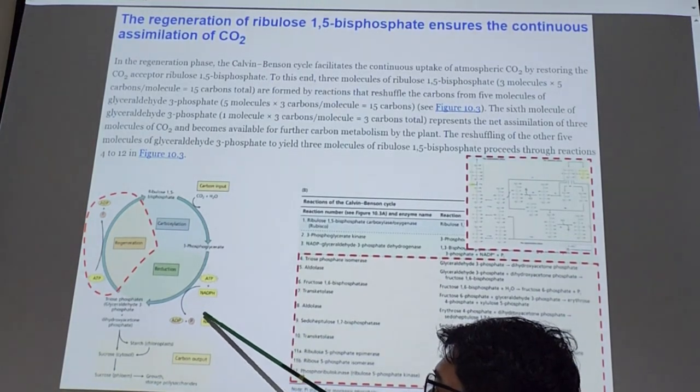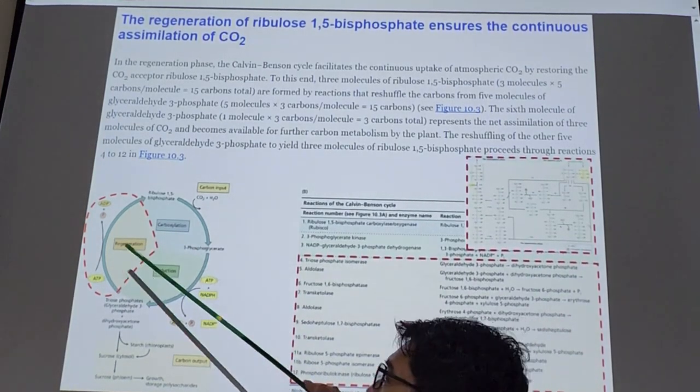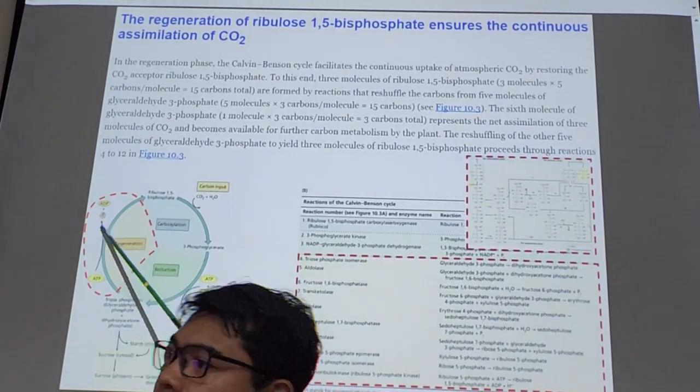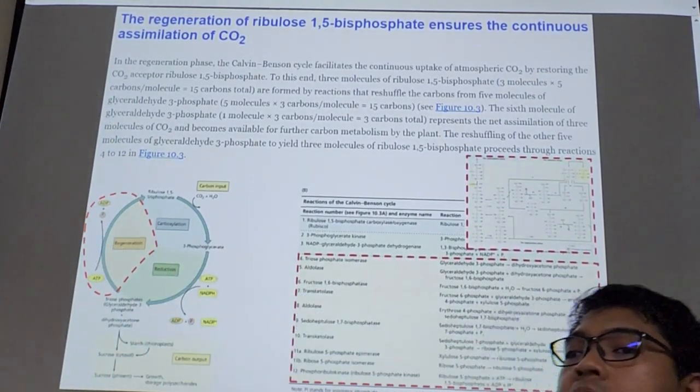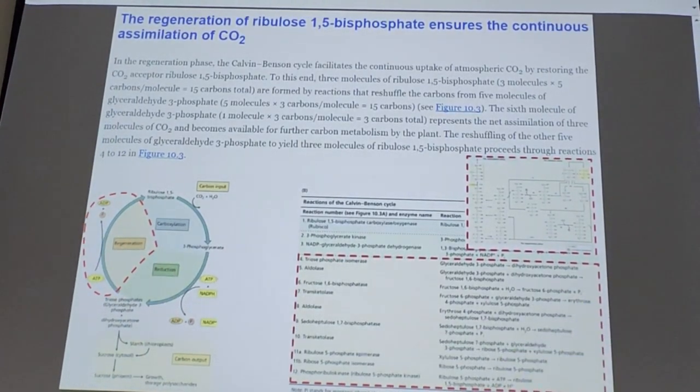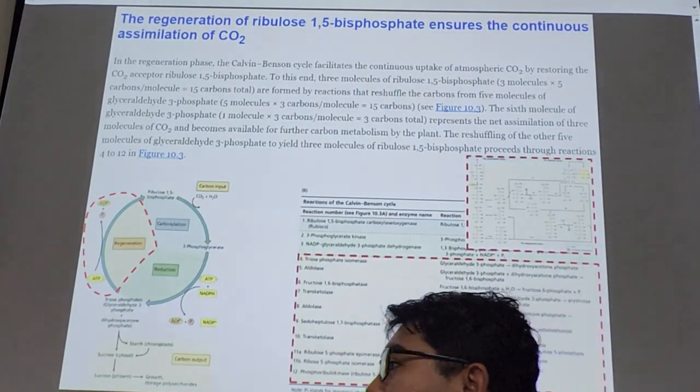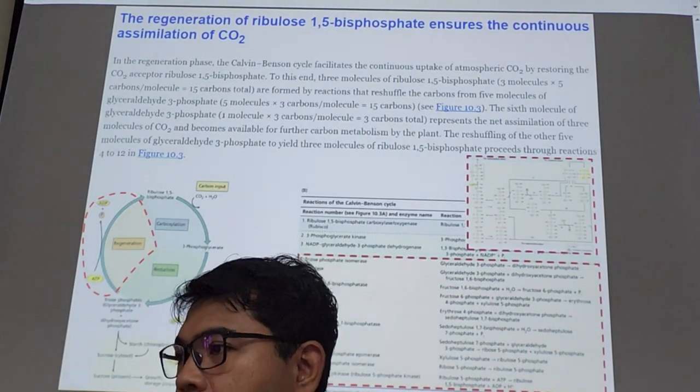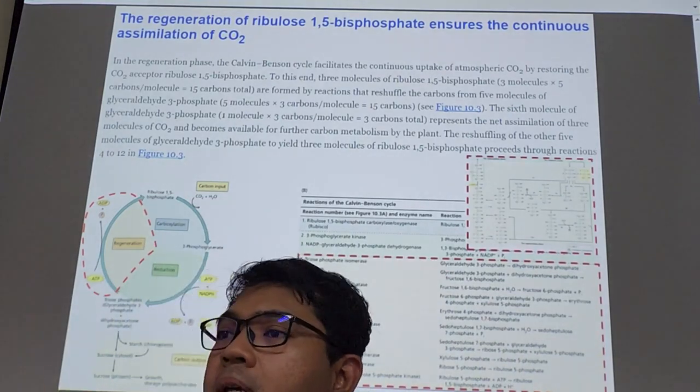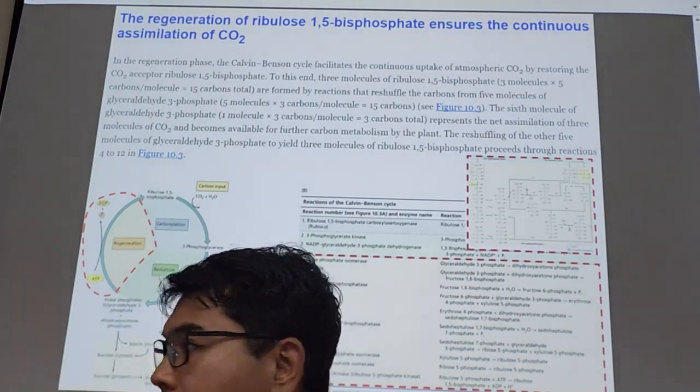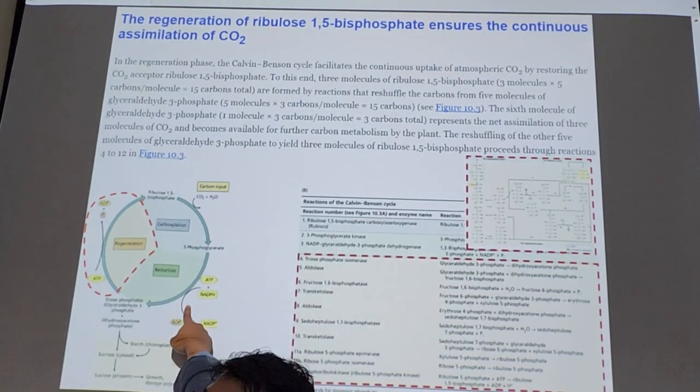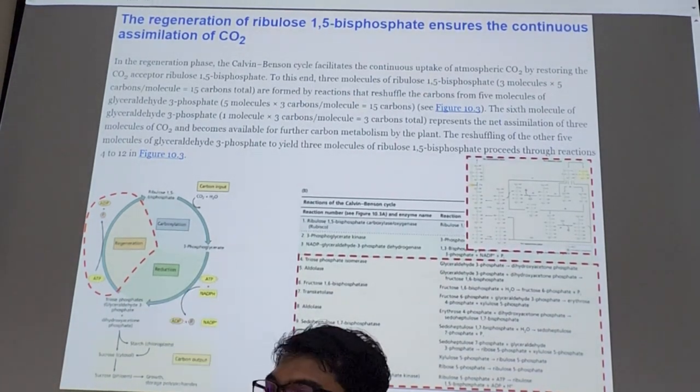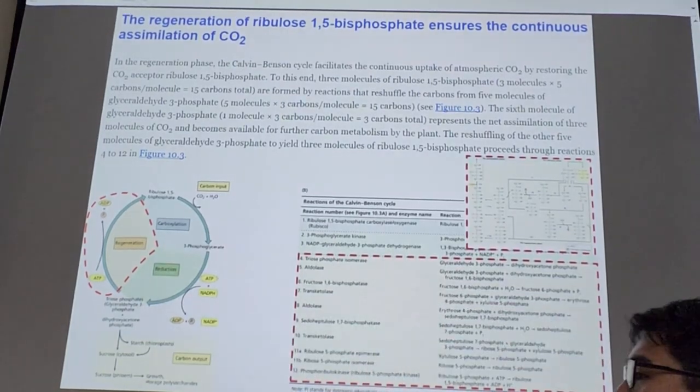However, ATP you need here when you want to regenerate, you want ATP again. So that's why when you learn the light reaction, plants decide to do cyclic photophosphorylation, so that more ATP is regenerated to satisfy the needs of ATP in the Calvin cycle.